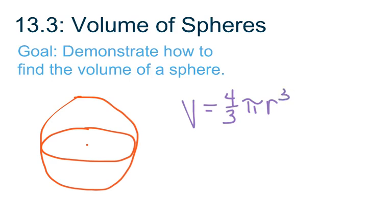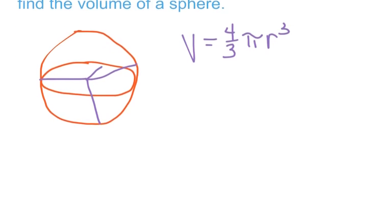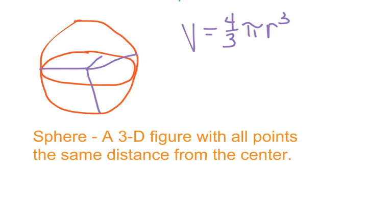The radius goes from the center of the sphere out to the edge. No matter how you draw that radius going to an edge, it is the radius. So, volume is equal to 4 thirds pi r cubed. That brings us to our definition of a sphere: a three-dimensional figure with all points the same distance from the center — and that same distance is the radius.